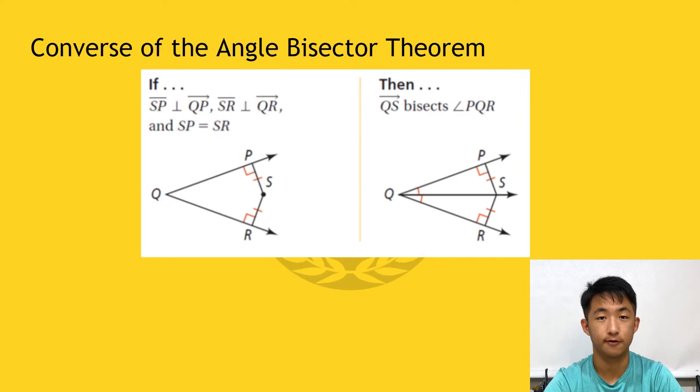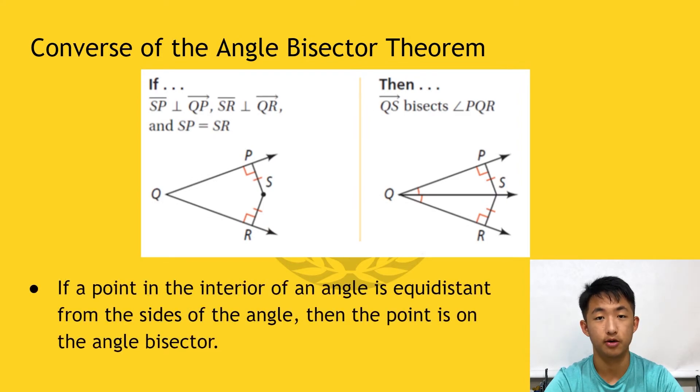There's also a converse for this theorem. If a point in the interior of an angle is equidistant from the sides of that angle, it must be on the angle bisector.